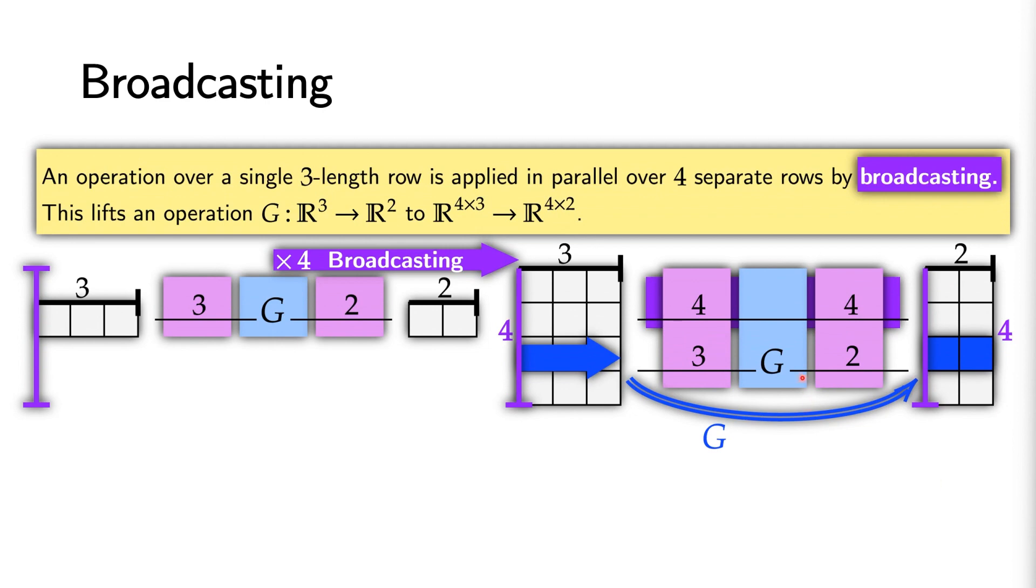With neural circuit diagrams, broadcasting is shown by placing a wire adjacent to a function. This action naturally modifies the input and the output axis sizes to broadcast an operation and lift it over an additional axis.